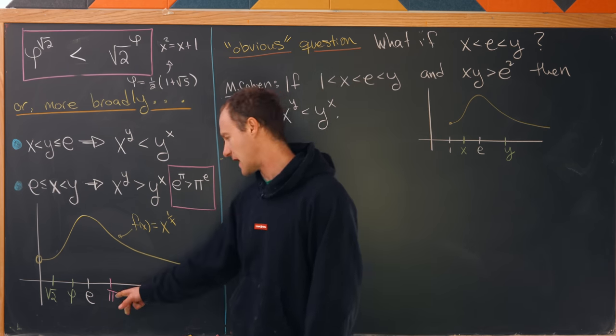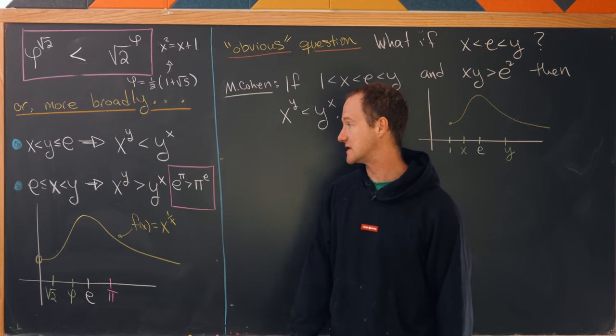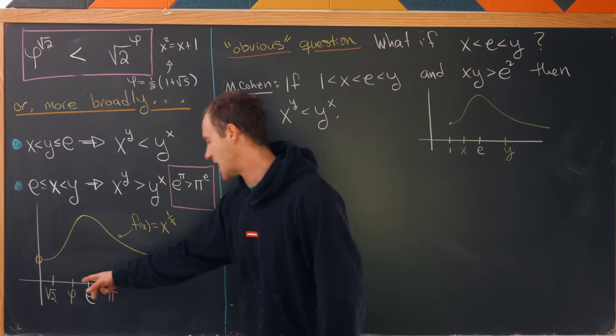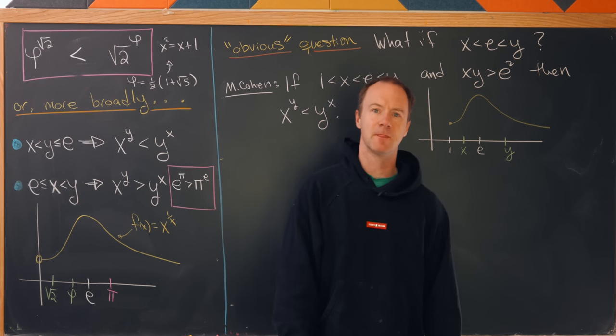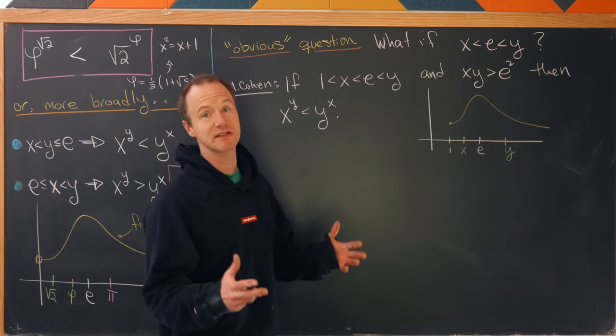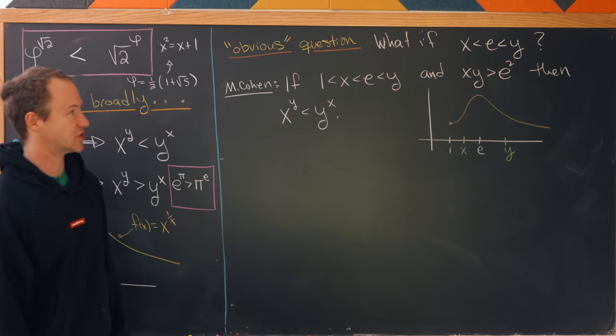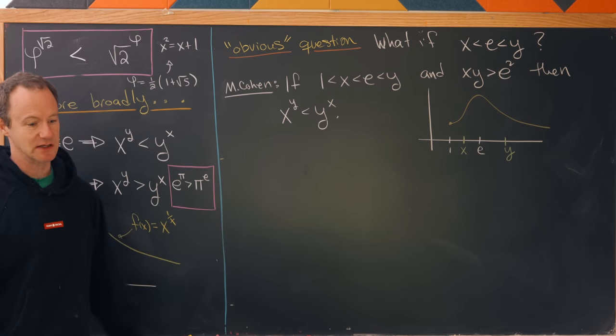That's because we've got pi out here to the right of e. Whereas in our case, we've got everything to the left of e. But I guess that really brings up the following obvious question, and that is, what if x and y straddle e?